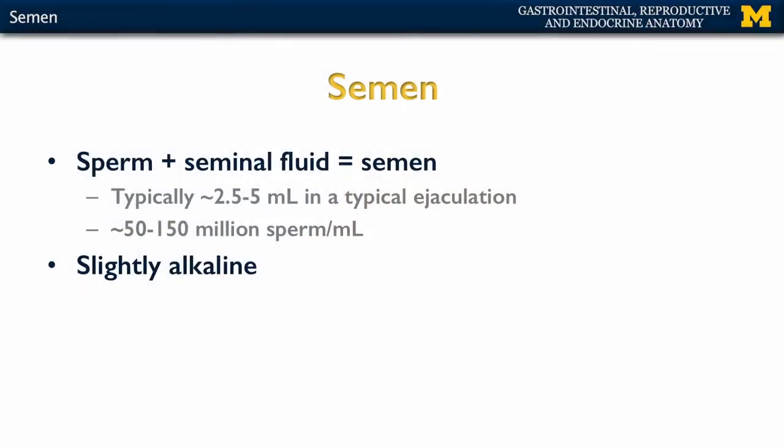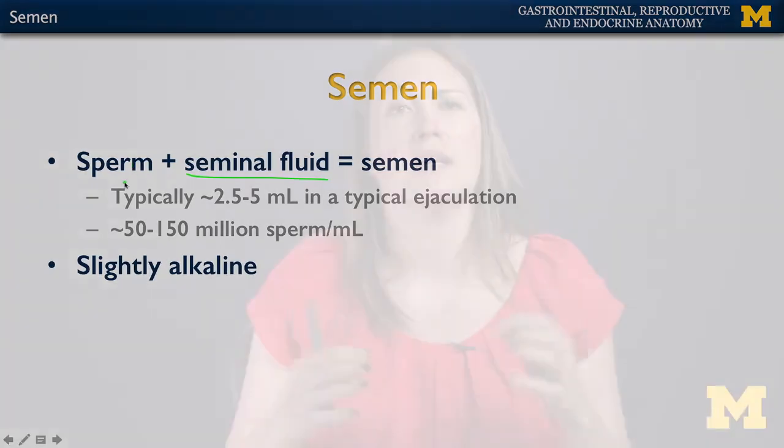Let's discuss the specific components of semen. A lot of times semen and sperm are used interchangeably, and that is certainly an oversimplification. In fact, the largest component of semen is really the seminal fluid that is going to be secreted by those accessory sex glands — the prostate and the seminal vesicles. When the sperm and the seminal fluids have been dumped into that prostatic urethra, that collection of those two fluids will be semen.